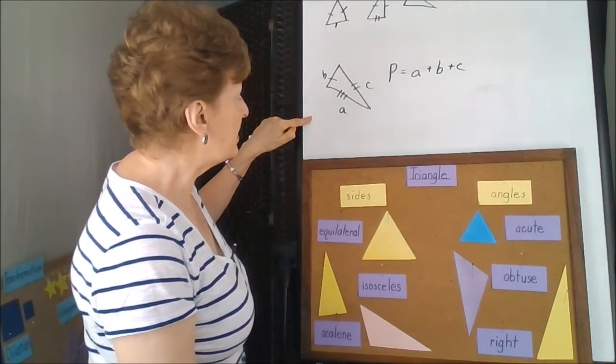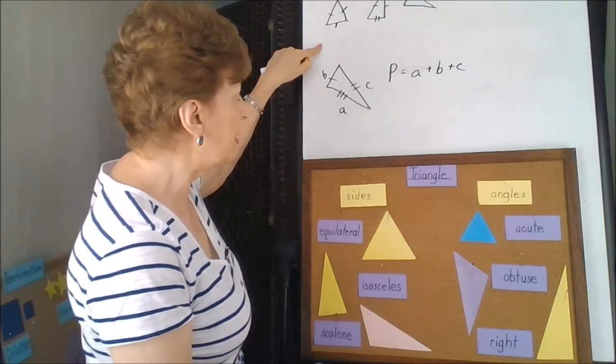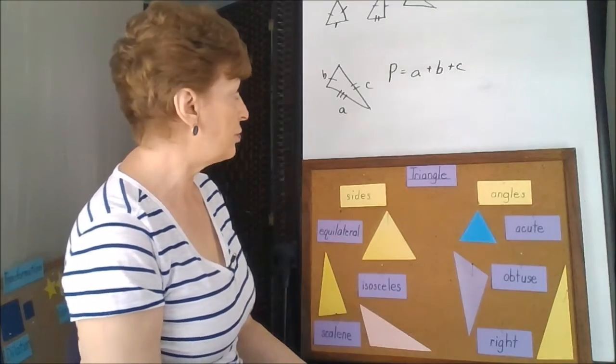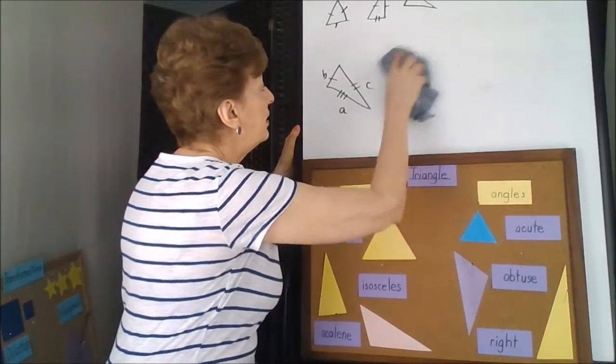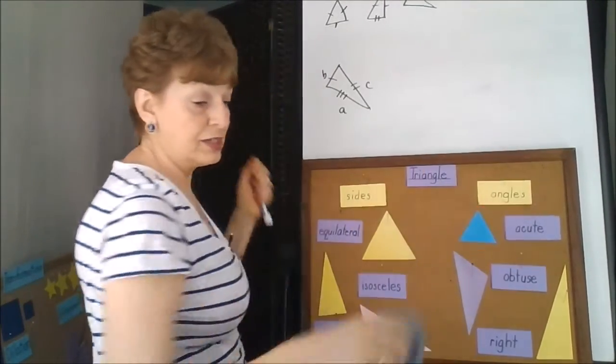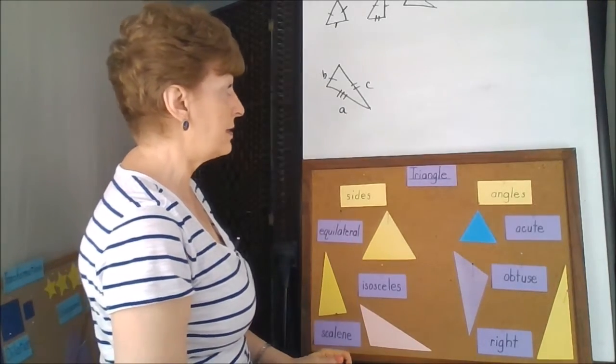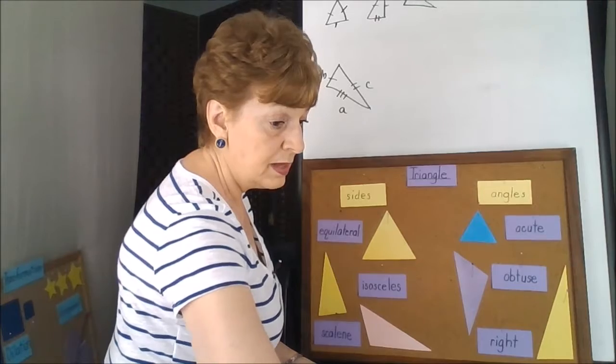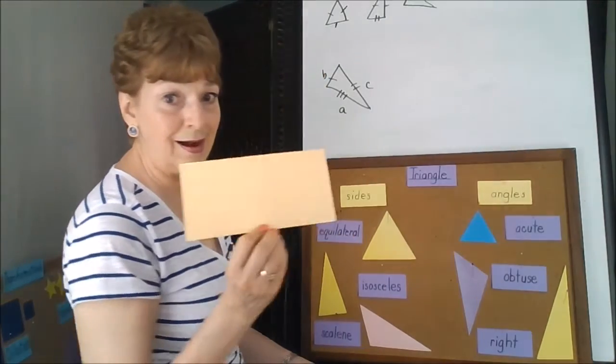Now the only difference that we have here is the perimeter is looking at the sides. When we get to the area of a triangle, we have to look at the shape to see if we have wasted space.